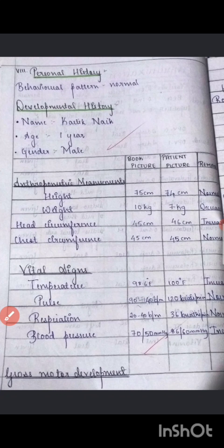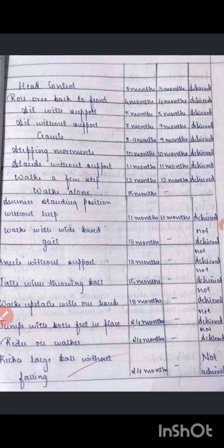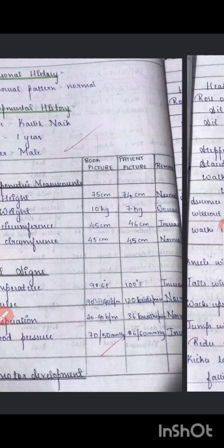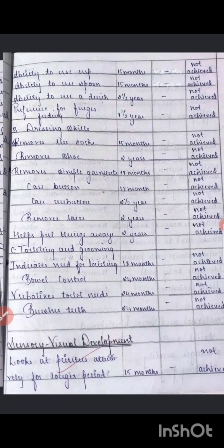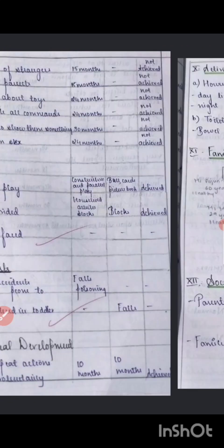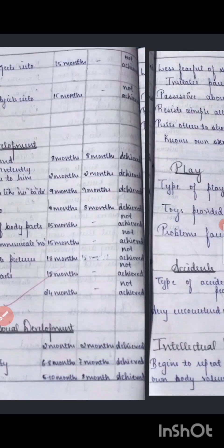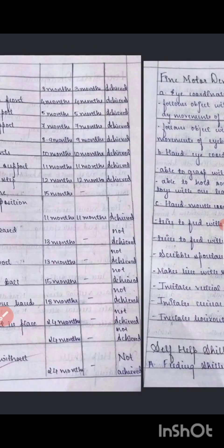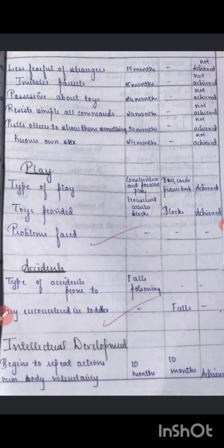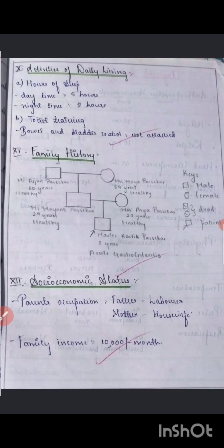Next you have to mention the developmental history and developmental milestones, which differ by age group — toddlers, preschoolers, school-age children, adolescents, and neonates are all different. If you want me to explain milestones for each age group separately, let me know and I will make a separate video on it.